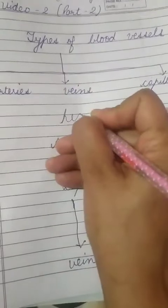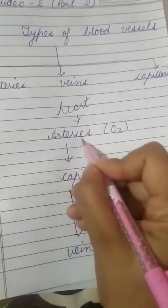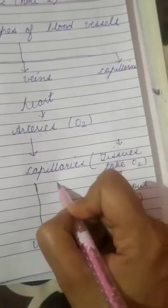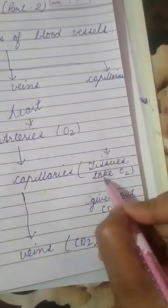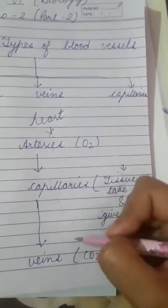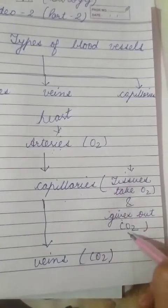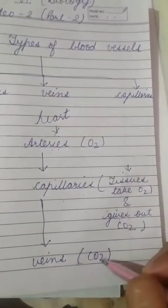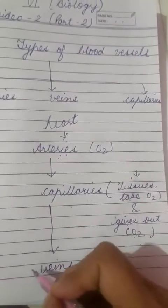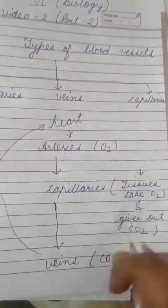As shown in the flow chart in my copy, blood from the heart travels through arteries to the capillaries. In the capillaries, tissues take in oxygen and give out carbon dioxide. Capillaries act as the bridge between arteries and veins. The carbon dioxide-rich blood is then taken by the veins and goes back to the heart, making it a regular continuous path.